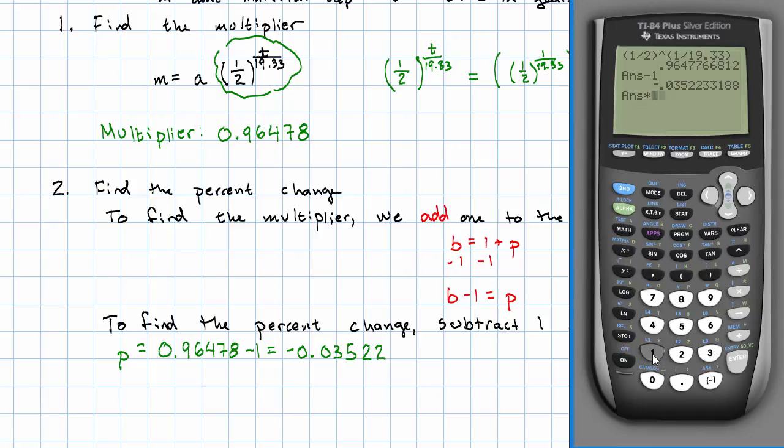Make that a percent, and maybe round the percent. This is good, negative 3.522 percent.